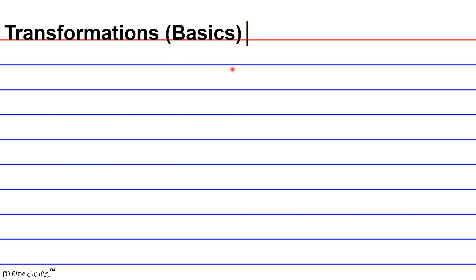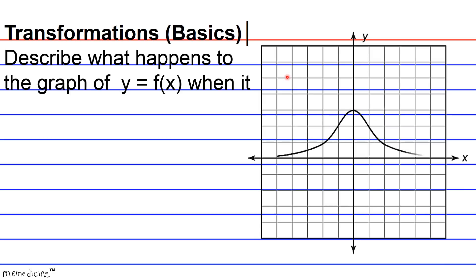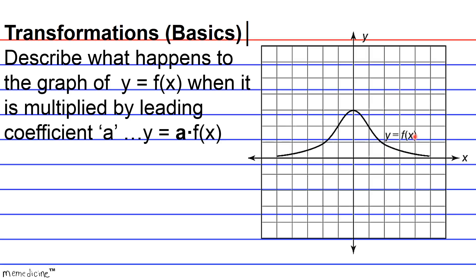Transformations Basics. Describe what happens to the graph of y equals f of x when it is multiplied by a leading coefficient a. That is, y equals a times f of x. And for argument's sake, let's say that a has a value of 2 in this example. So definitely press pause if you need to and take your time to come up with an exact description of what happens to the graph of y equals f of x.